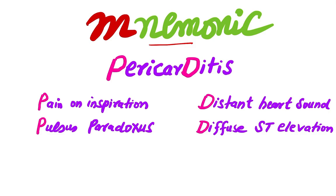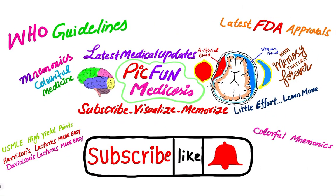Using the mnemonic for pericarditis: there is pain on inspiration, pulsus paradoxus, distant third heart sound, and diffuse ST segment elevation on ECG. Thanks for watching — please subscribe to my channel, where you can find the latest WHO guidelines, latest medical updates, and latest FDA approvals.